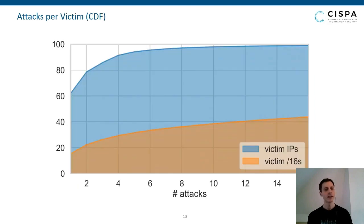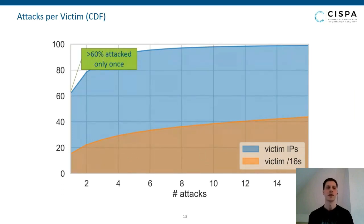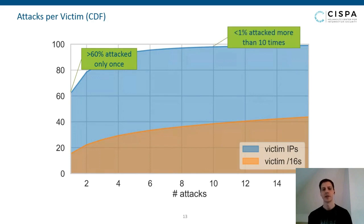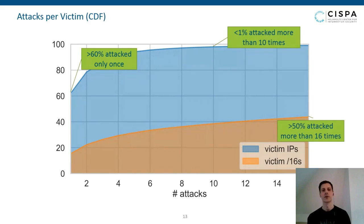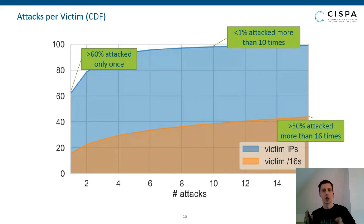Looking at the victim IPs, most victims are attacked only once — over 60% of all victim IPs are attacked only once, and less than 1% are attacked more than 10 times. However, looking at the networks these IPs are located in, over half of all /16 networks are attacked more than 16 times. Individual IPs are attacked rarely, but the networks they're in see lots of attacks.